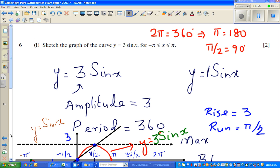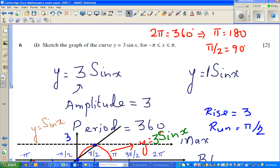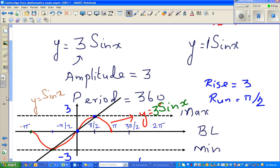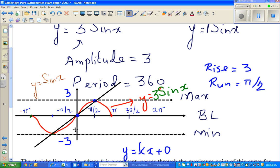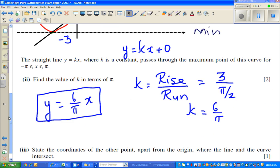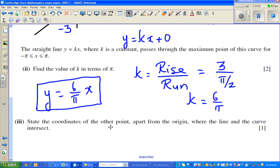So in this question, there was one more question I didn't see. We graphed this equation y equals 3 sine x, and then there was a line kx that passed through the maximum. We found the equation of that line is 6 over pi x. The next question is a very good question.